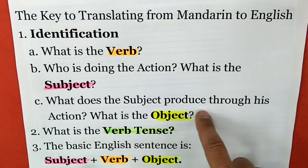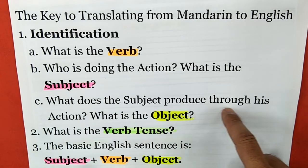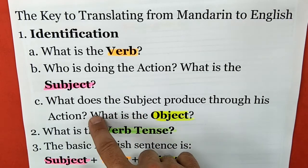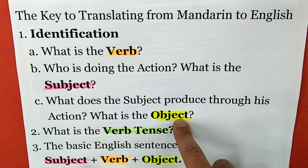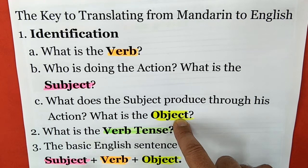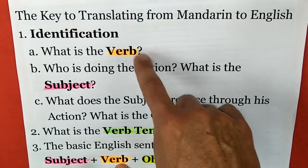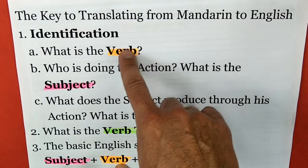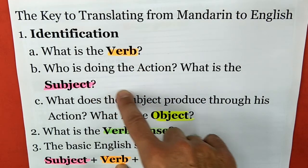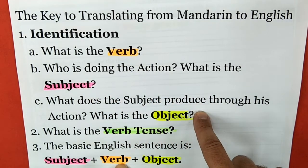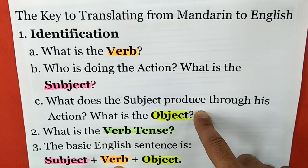What does the subject produce through his action? That's the object. So we find the verb, we find the subject, and then we find the object. That's step one.